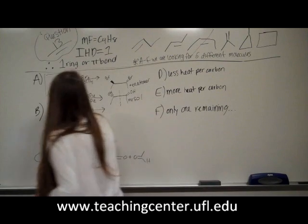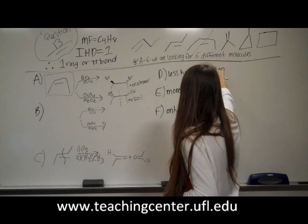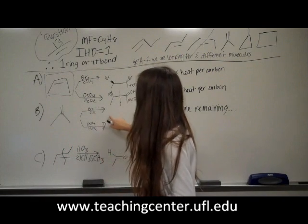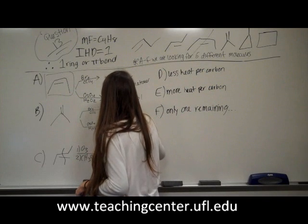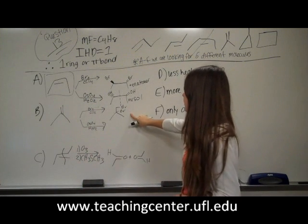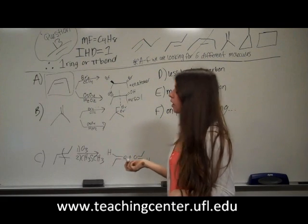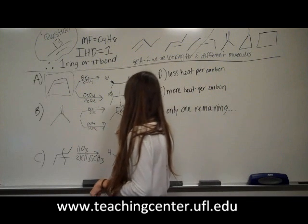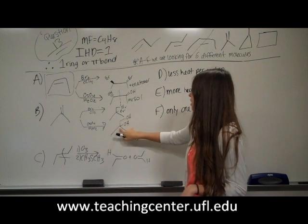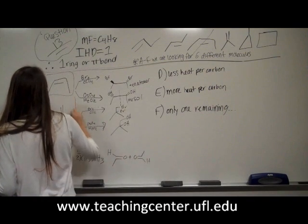Instead, you can do trial and error. Let's try 1-butene. When we treat it with Br2, neither of the two carbons where bromine adds are chiral centers, so the product is not optically active. The same applies when we add two OHs via OsO4 — there are no chiral centers. Therefore, this satisfies the condition of producing a single optically inactive molecule in both reactions. So 1-butene is the answer for Unknown B.